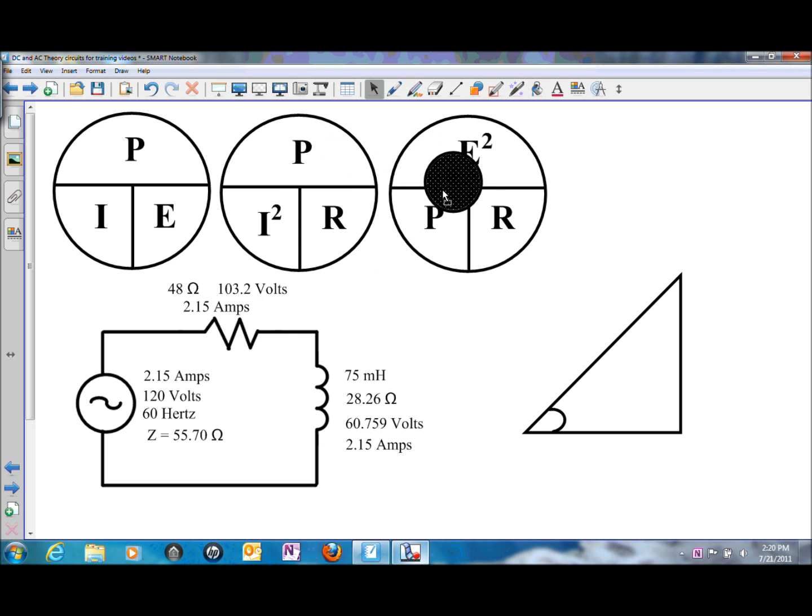If we wanted to solve for total, we could use E squared divided by R, or 120 volts squared divided by 55.7 ohms of impedance. So whichever formula you use, as long as the correct numbers for the individual components or the totals are used in the right place, then you will end up with the right answers.